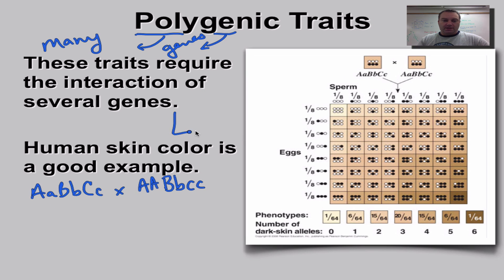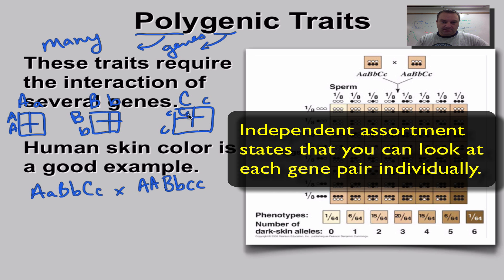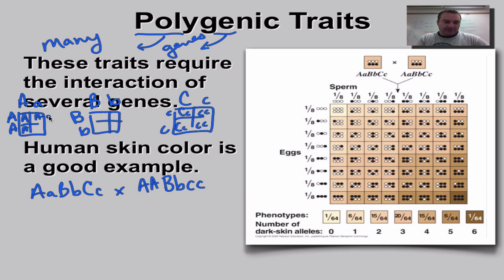Instead of one giant Punnett square, we're going to look at each gene pair individually and make three separate Punnett squares. For the A locus: big A, small a crossed with big A, big A. For the B locus: big B, little b crossed with big B, little b — giving a one-to-two-to-one ratio. For the C locus: big C, little c crossed with little c, little c — some will be heterozygous.